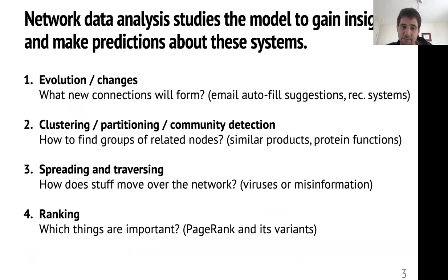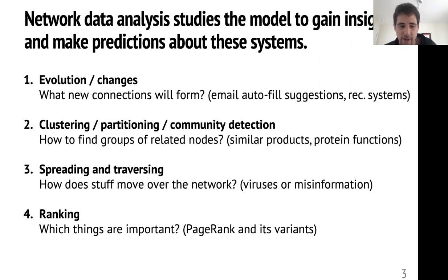This graph or network formalism — I'll use those words interchangeably — has been used to gain insight into many different types of systems. These are the kinds of questions we might ask: how things evolve or change over time, which is how people design recommender systems or how Google fills in automatic suggestions for who to email; clustering, partitioning, or community detection problems, where the goal is to find groups of related nodes; spreading or traversing, thinking about how things move over networks like viruses or misinformation; and ranking — which things are important to the graph — the idea underlying PageRank or search.